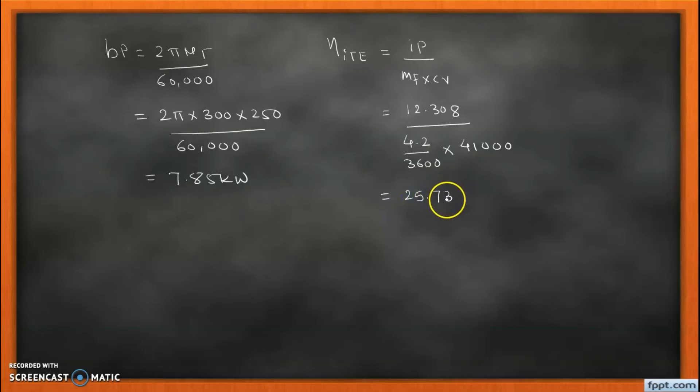Similarly, for brake thermal efficiency, BTE equals the brake power divided by ṁf × CV. So brake power is 7.85, fuel consumption is 4.2/3600 × 41,000. So brake thermal efficiency we get, that is 16.4%.